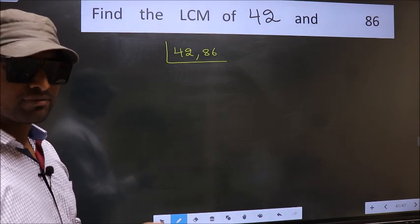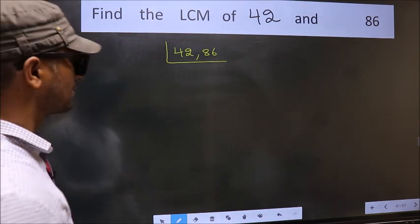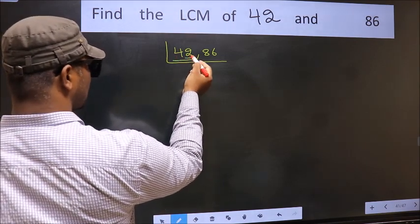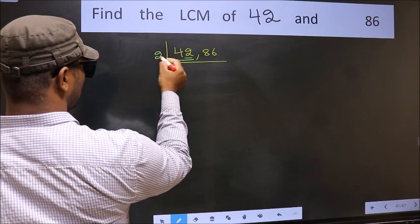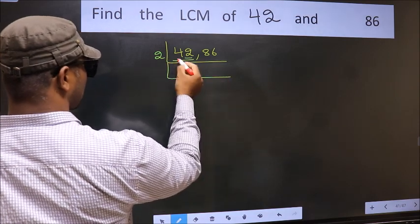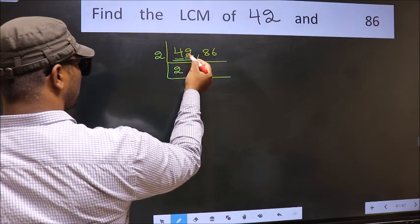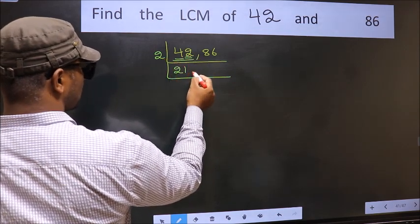Now you should focus on the first number which is 42 here. For this number, last digit 2, even, so take 2. First number 4, when do we get 4 in 2 table? 2 twos, 4. The other number 2, when do we get 2 in 2 table? 2 ones, 2.